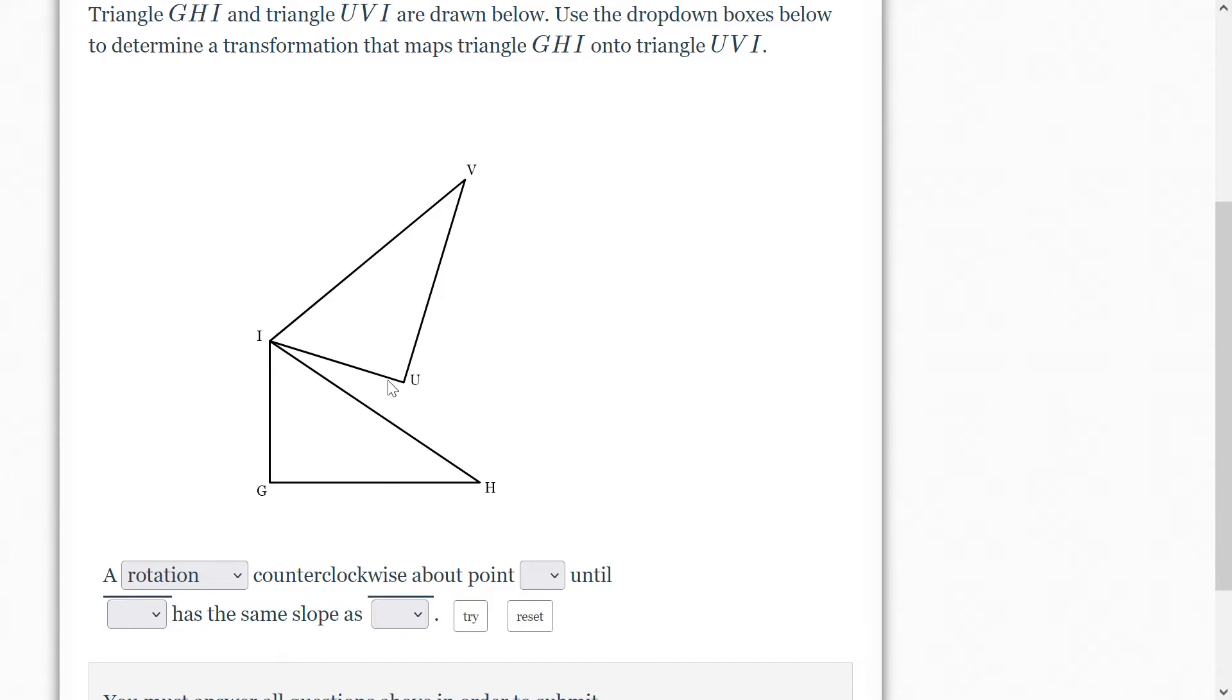Counterclockwise is positive, or clockwise is negative, but in this case you don't even need to know that. They're just saying you're going counterclockwise. And notice we're starting with G, H, and I and going on to U, V, and I.